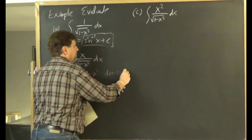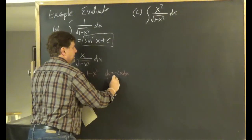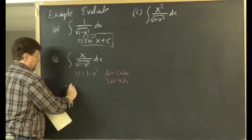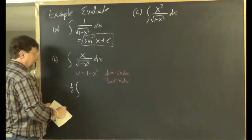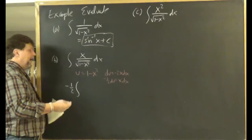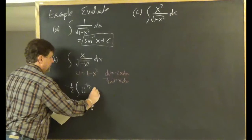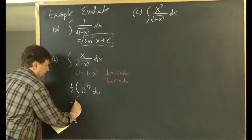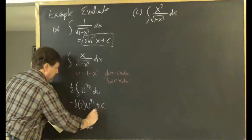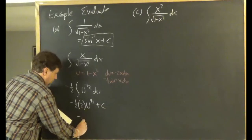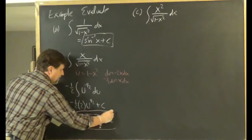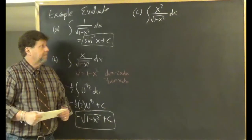For part (b), this requires u-substitution. Let u = 1 − x², so du = −2x dx, meaning −(1/2) du = x dx. Substituting in and pulling the −1/2 out front, the integral becomes −(1/2)∫u^(−1/2) du. The antiderivative is −√(1 − x²) + C.